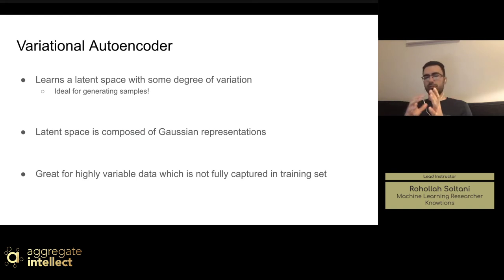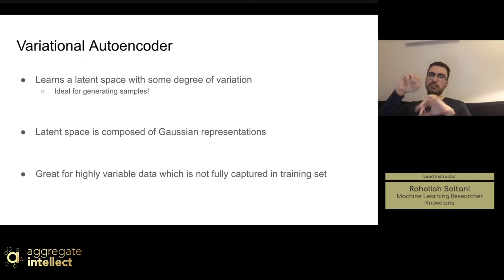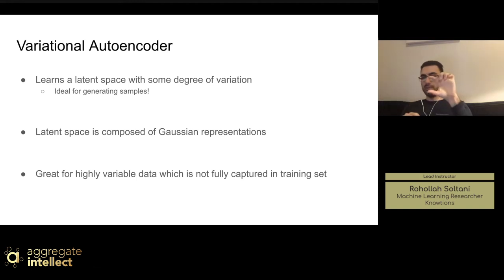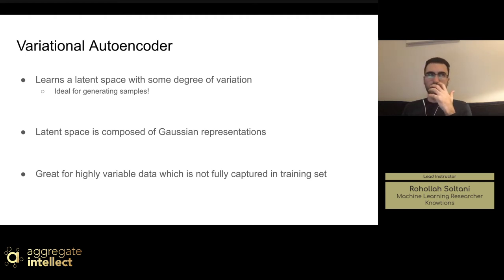One benefit of the variational autoencoder is that you can interpolate within the latent space and the interpolation will be meaningful. For example in MNIST, if character '1' maps to one point in the space and character '2' maps to another, because it's like a Gaussian fitted prior on the latent space, moving from one point to the other will cause the output to gradually fade from one character to the other. All nodes in that latent space will be meaningful.